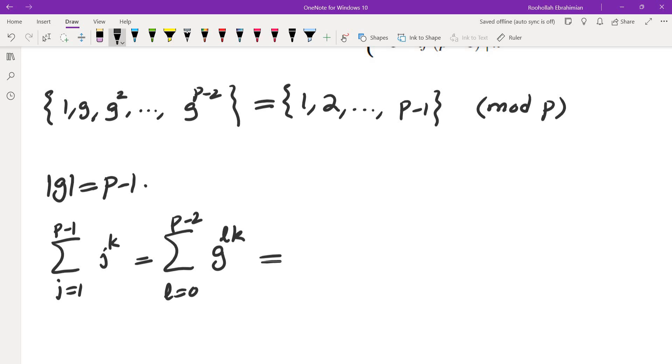Now the nice thing about this quantity is that it is in fact a geometric sum. So I can write it down as 1 (the first term) minus the term after the last term. That's the formula for geometric sum. The term after the last term is g^((p-1)k) divided by 1 - g^k. This is if g^k is not 1.